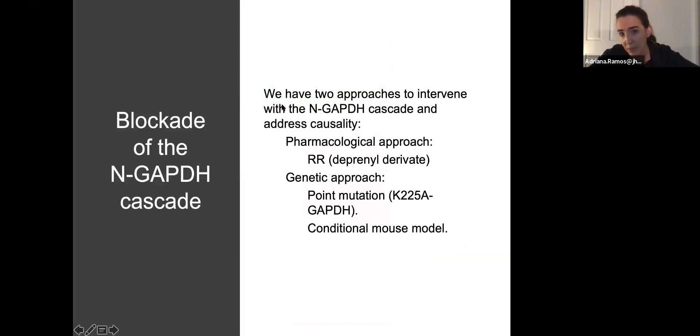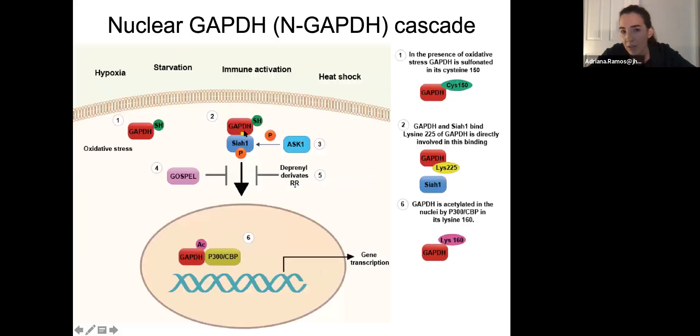For us, we have two different ways to intervene with this cascade. We have a pharmacological approach that is a drug we call ARAR that we demonstrated is able to cross the BBB and reach the central nervous system. As well, we have a genetic approach that is a point mutation in GAPDH that would block the binding between GAPDH and Siah1. We took advantage of that point mutation to create a conditional mouse model. Both approaches will target this binding. If this doesn't bind, GAPDH won't move to the nucleus.